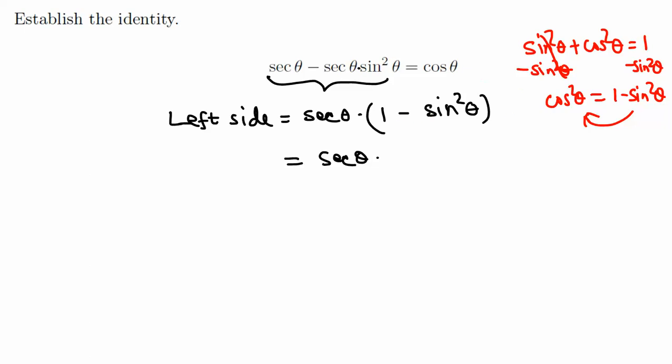So this is cosine squared theta. And we know that secant is the reciprocal of cosine. We have cosine, so we need to change this into cosine. If we look at the right-hand side, that's in terms of cosine as well.